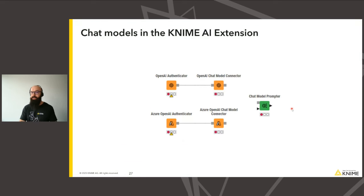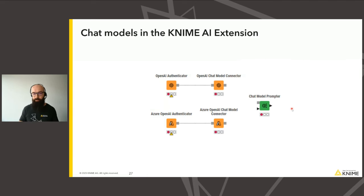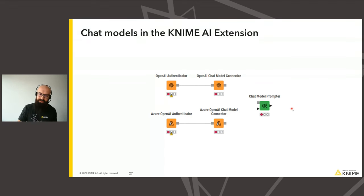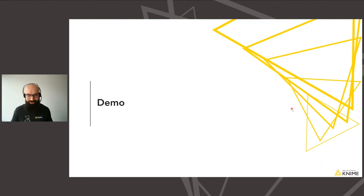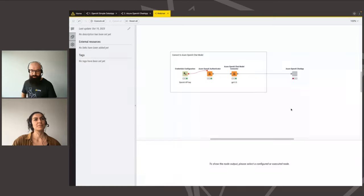In KNIME, we currently have the OpenAI ChatModel connector and the Azure OpenAI ChatModel connector, released today. Those can be connected to the ChatModel Prompter. We don't have open source ChatModel connectors yet, but Sarai is actually working on implementing those for the December release. So keep your eyes peeled for those. Now please check out the demo by Sarai, where she will show you how to build a chat app using the ChatModel Prompter.